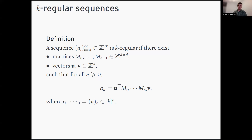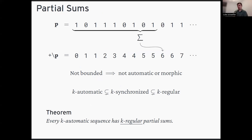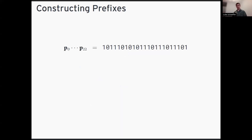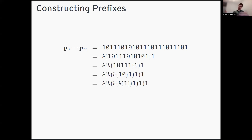Our goal is to prove that starting from a k-automatic sequence you get a k-regular sequence of partial sums. To do that, let's look at prefixes of k-automatic sequences. Take the first 23 symbols in period doubling: because it's a morphic sequence, we can factor it so that a large part of the prefix is the image of an earlier prefix, followed by some short appended string. We can factor that earlier prefix recursively, yielding a decomposition alternating between applying h and appending some short string.